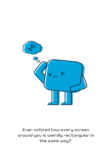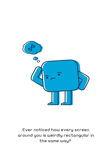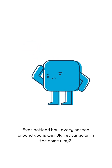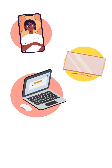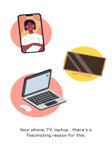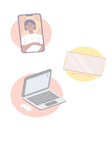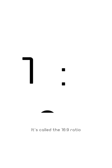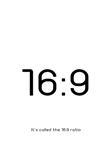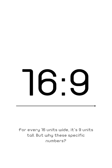Ever noticed how every screen around you is weirdly rectangular in the same way? Your phone, TV, laptop — there's a fascinating reason for this. It's called the 16x9 ratio. For every 16 units wide, it's 9 units tall. But why these specific numbers?